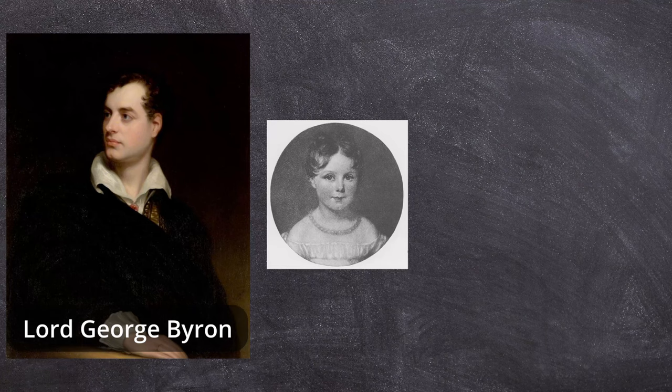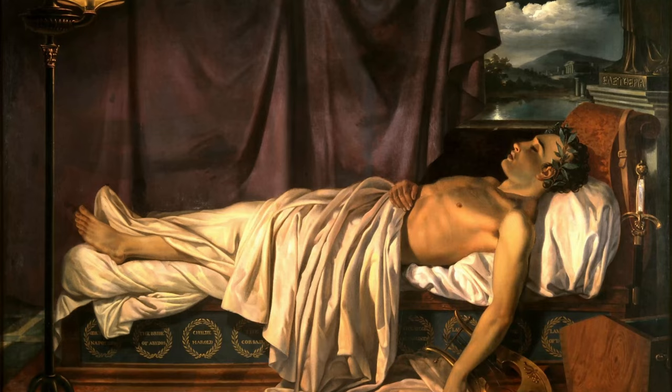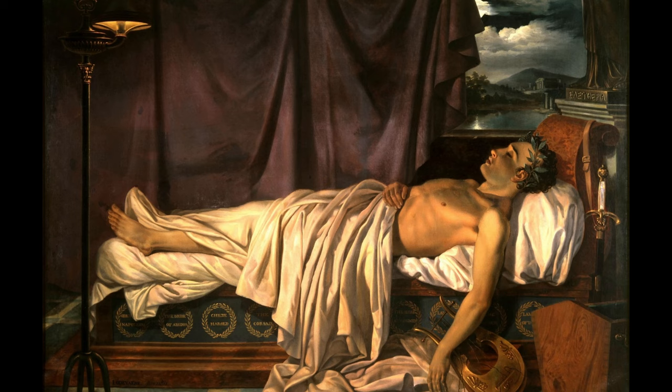Ada Lovelace was born on December 10, 1815, under the famous poet Lord George Byron and his wife, Lady Byron. Sadly, Lord Byron left the family when she was young, but her mom, Lady Byron, a mathematician herself, insisted that Ada should have proper tutoring in math and science — which she hoped would help prevent the insanity and excessive romanticism from her father.